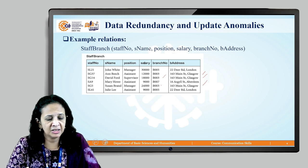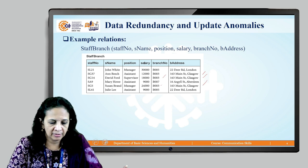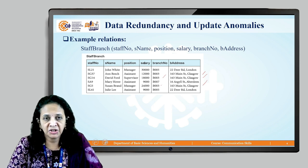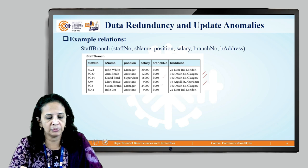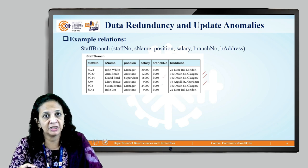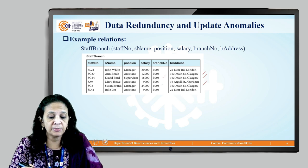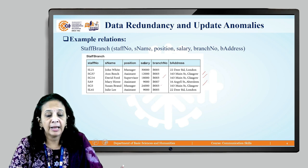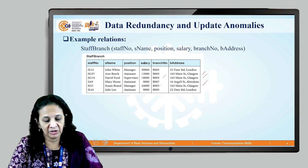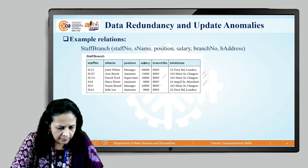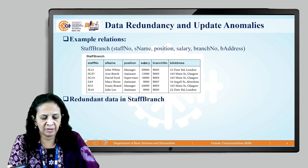If this staff-branch table has hundreds of records and 20 staff are working in branch B003, then that branch number and its address will appear 20 times — creating more redundancy, requiring more storage space, and making retrieval difficult. This is why we call these update anomalies. There are three types of update anomalies: insertion anomaly, deletion anomaly, and modification anomaly.